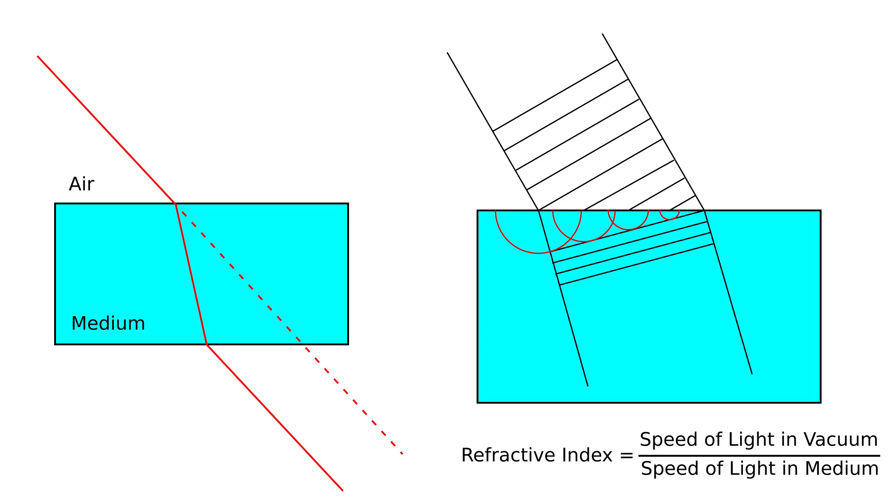Therefore, the wave fronts of the new waves inside the material are tilted by a specific angle that depends on the angle of the incoming light and the refractive index of the material. However, the refractive index is not constant for all colors, but varies for different wavelengths.